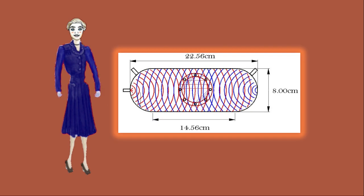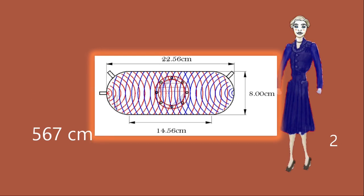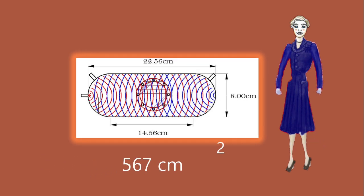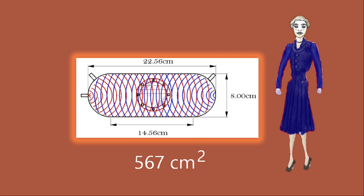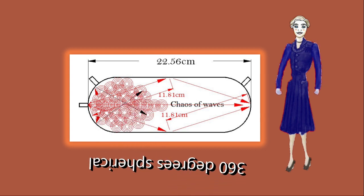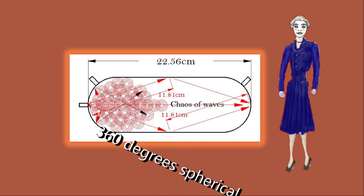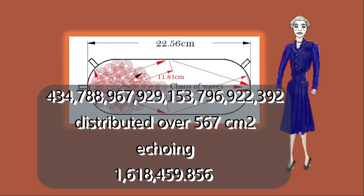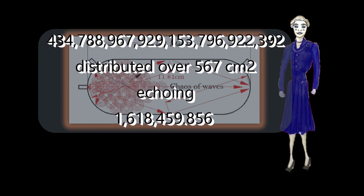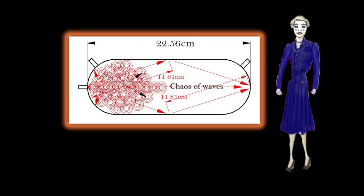Now back to that energy wave moving through these hot molecules. The surface area of our chamber on the inside is 567 square centimeters. One gram of water molecules is undergoing a thermal redistribution being reflected back by the chamber walls in all directions. Though the drawing shows a linear front-to-back wave, this is only a concept drawing — the actual wave is 360 degrees spherical. The professor uses 1 gram of water molecules distributed over 567 square centimeters, with an energy wave echoing 1,618,459.856 times in 20 milliseconds.